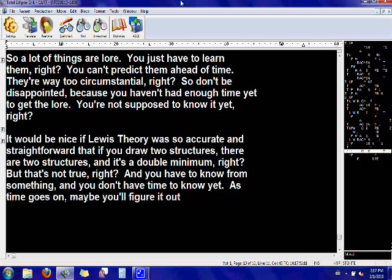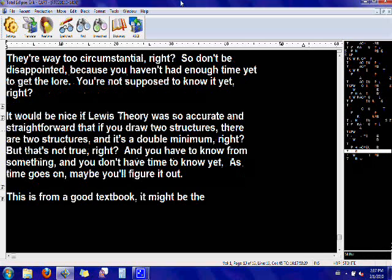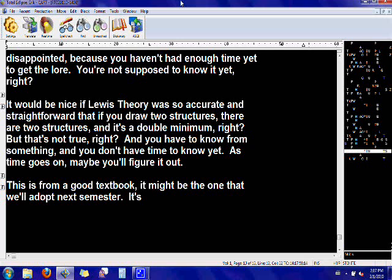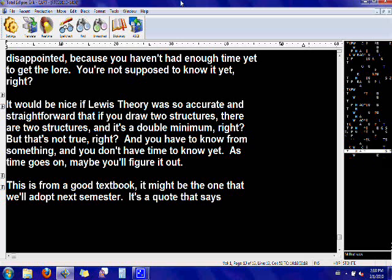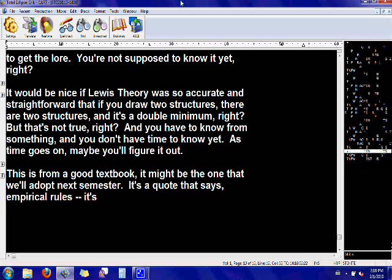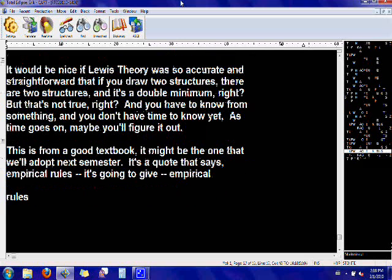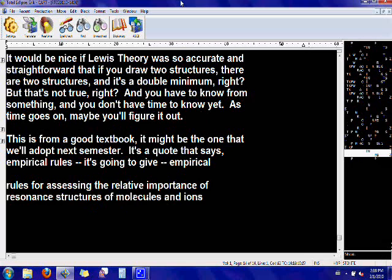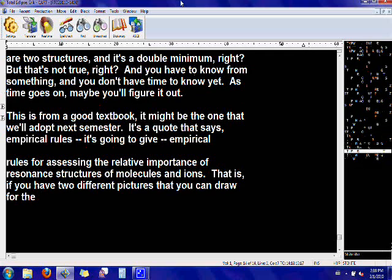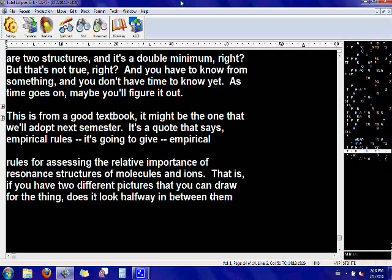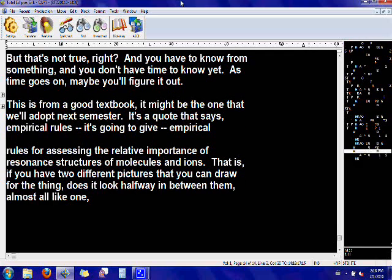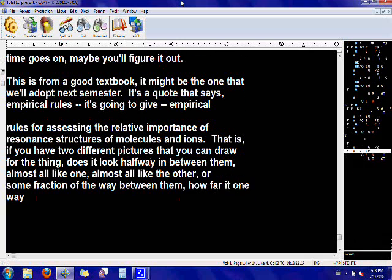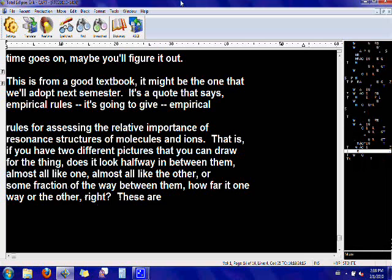This is from a good textbook. It might be the one that we'll adopt next semester. It's a quote that says, empirical rules. It's going to give empirical rules for assessing the relative importance of the resonance structures of molecules and ions. That is, if you have two different pictures that you can draw for the thing, does it look halfway in between them, almost all like one, almost all like the other, or some fraction of the way between them? How far is it one way or the other?